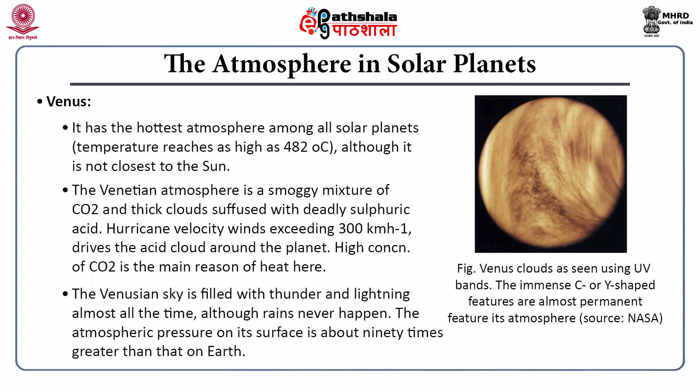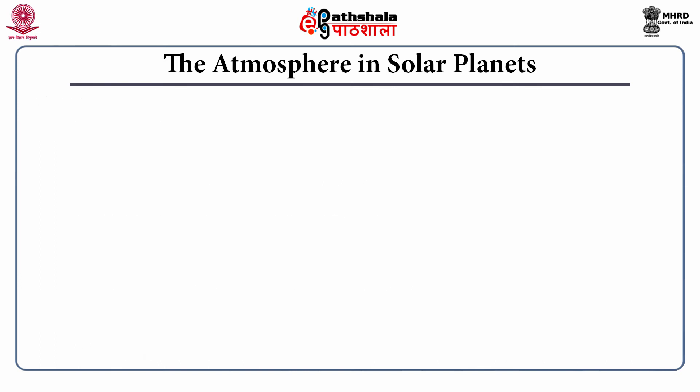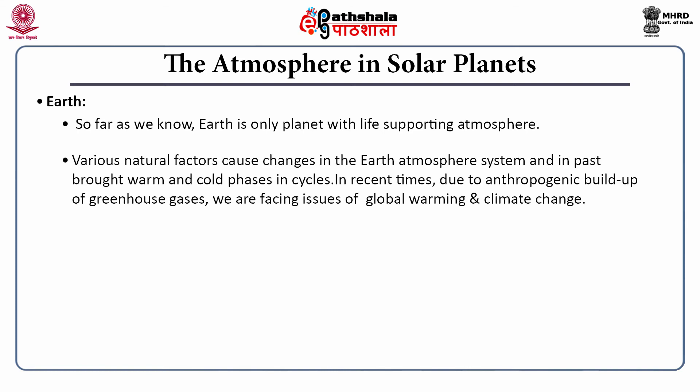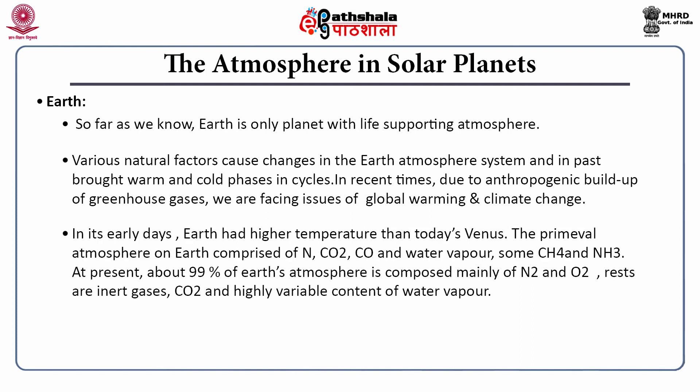The atmospheric pressure on Venus's surface is about 90 times higher than that of Earth. Next, our planet Earth — so far, we know Earth is the only planet which supports life. Various natural factors cause changes in Earth's atmosphere and in the past have brought warm phases and cold phases in cycles. In recent times, due to anthropogenic activities, there is a buildup of greenhouse gases in Earth's atmosphere, causing global warming and climate change. In its early days, Earth had higher temperatures even than today's Venus. At present, almost 99 percent of Earth's atmosphere is composed of nitrogen and oxygen, with the rest being inert gases, carbon dioxide and some highly variable water vapour content. Earth's atmosphere shows a distinct vertical temperature profile.